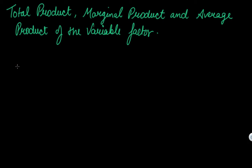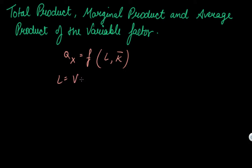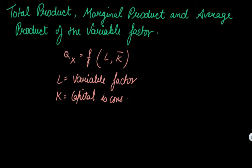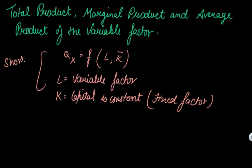Welcome everyone. In this video we will be studying about the total product, marginal product, and average product of the variable factor. This is the production function — a function of labor or capital. Here, only two factors are taken: labor is the variable factor, and K (capital) is the constant, fixed factor. Since we have one fixed factor, this is a short run scenario.